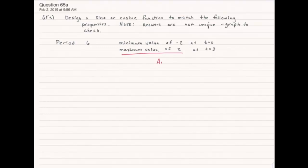I can tell immediately that my amplitude is going to be 2 because if I go from negative 2 to positive 2, the amplitude is halfway between the middle of the function to the upper part or halfway in the middle of the function to the bottom part. So my amplitude in this case is 2.